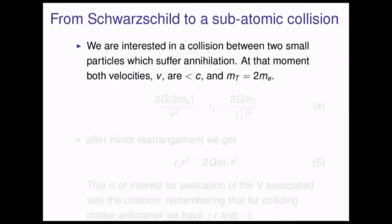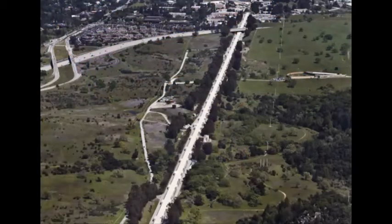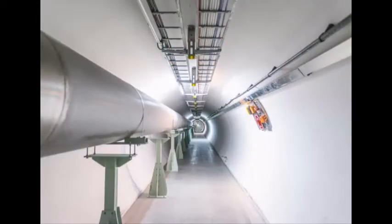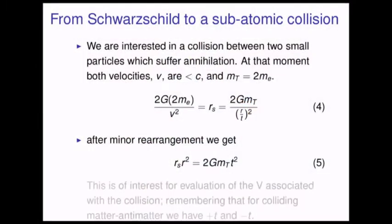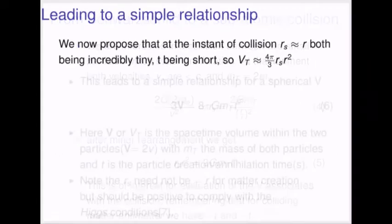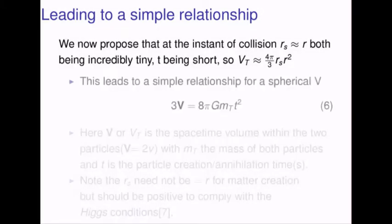We are interested in a collision between two small particles which suffer annihilation. At that moment, both velocities v are less than light speed, and M sub t equals twice the mass of an electron. After minor rearrangements, we get equation five. This is of interest for evaluation of the volume associated with the collision, remembering that for colliding matter and antimatter we have a plus time and a negative time. We now propose that at that instant of collision, R sub s is equivalent to R, both being incredibly tiny and time being very short, so that V sub t is equivalent to R sub s times R squared. This leads to a simpler relationship for a spherical volume, which is equation six.